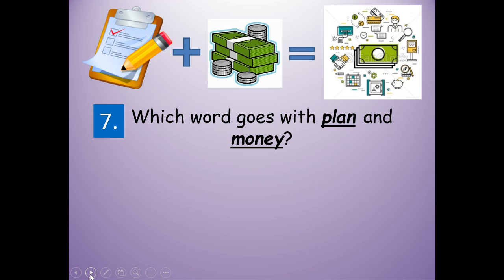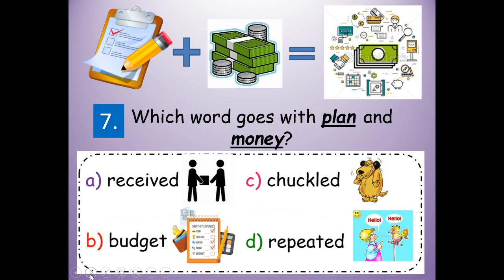Number seven: which word goes with plan and money? Does received go with plan and money? Budget? Chuckled? Or repeated? Look at your picture clues and think about what means the same. Budget — B-U-D-G-E-T — budget goes with plan and money.